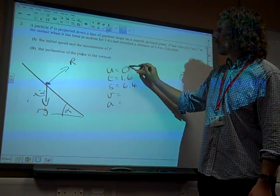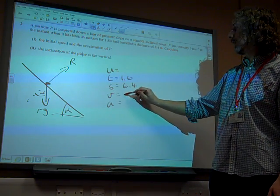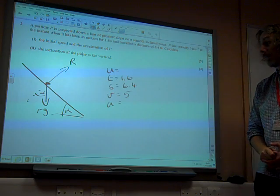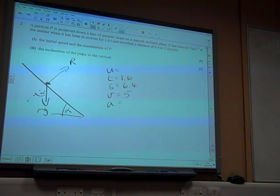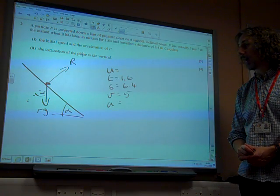We've got V as being 5. We need to find U. We need to find A. We've got T, S, and V given there. So we need to think, how can we link this together?